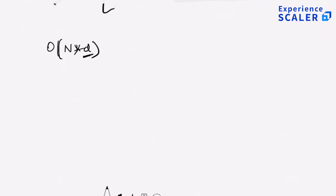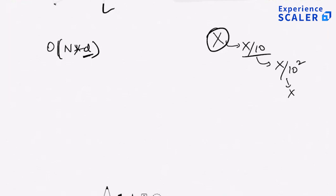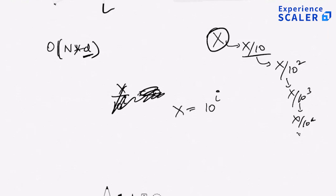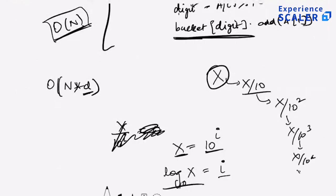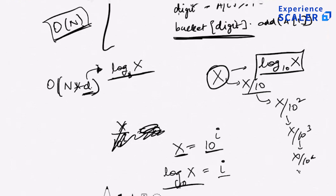The order of the algorithm is N times D. What is D? Given a number X, X has approximately log base 10 of X digits — because if X has i digits, then X ≈ 10^i, so taking log base 10 of both sides gives i = log(X). Therefore, whatever is the highest number in the array, D is basically log of that highest number. So your complexity is N times log base 10 of X, where X is the highest number.